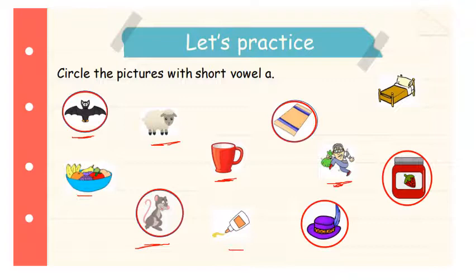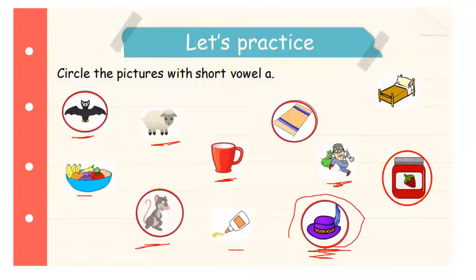Great job, everyone. What can you see here? This is a hat: H, A, T. Can you hear the short A sound in the word HAT? H, A, T — yes, yes. That's why we have to circle it. What can you see here? Here we have a BED: B, E, D — BED. Not BAD. Can you hear the short A sound in the word BED? No, of course we can't. So we're not going to circle it.